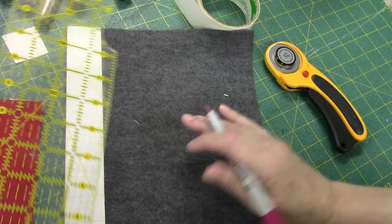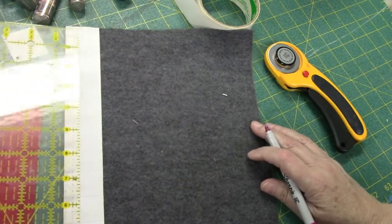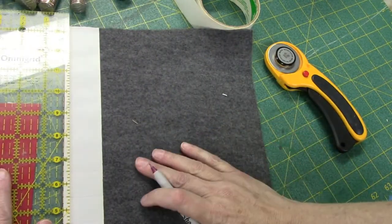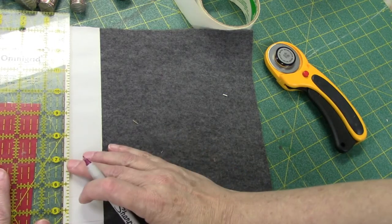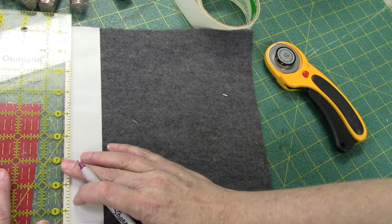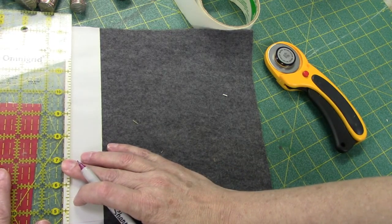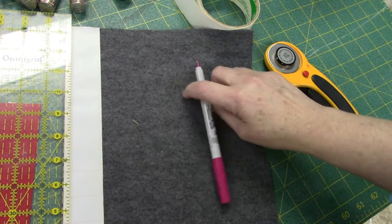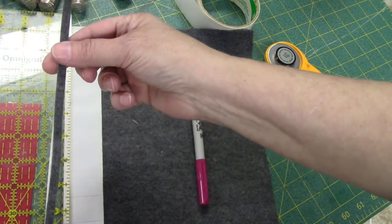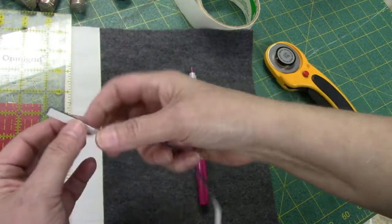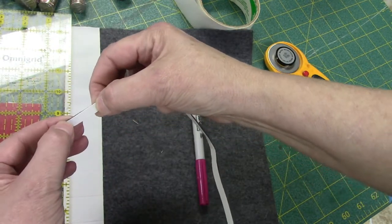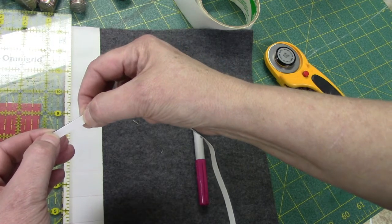And then you can cut with your rotary cutter a scant quarter. Don't do a full quarter because it won't fit in the slot very easily. Just cut little strips out. And they'll end up looking like this. And then you cut them about an inch long, a little bit less than an inch for each slot.